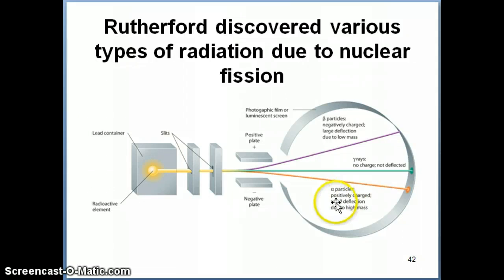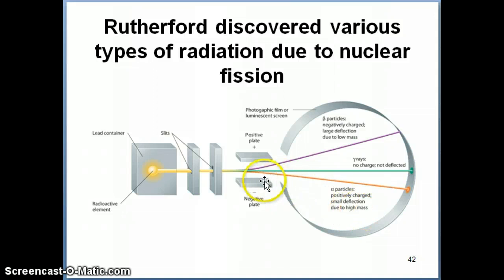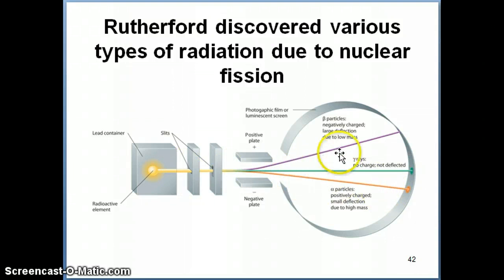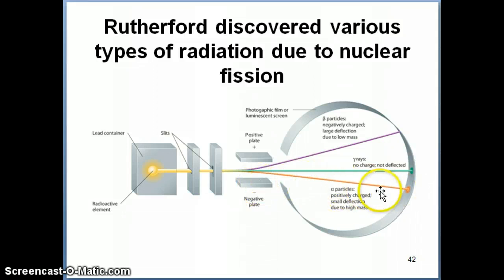One is called the alpha particle, which is a positively charged particle. It's fairly heavy in comparison to the electron. When you run a radioactive element and let it go, these byproducts are produced, and one of them is the alpha particle. Another one is called the beta particle — it's very light, so it's easily deflected. The alpha particle is heavy and hard to deflect. And then there's also gamma rays, which have no charge and are not deflected.